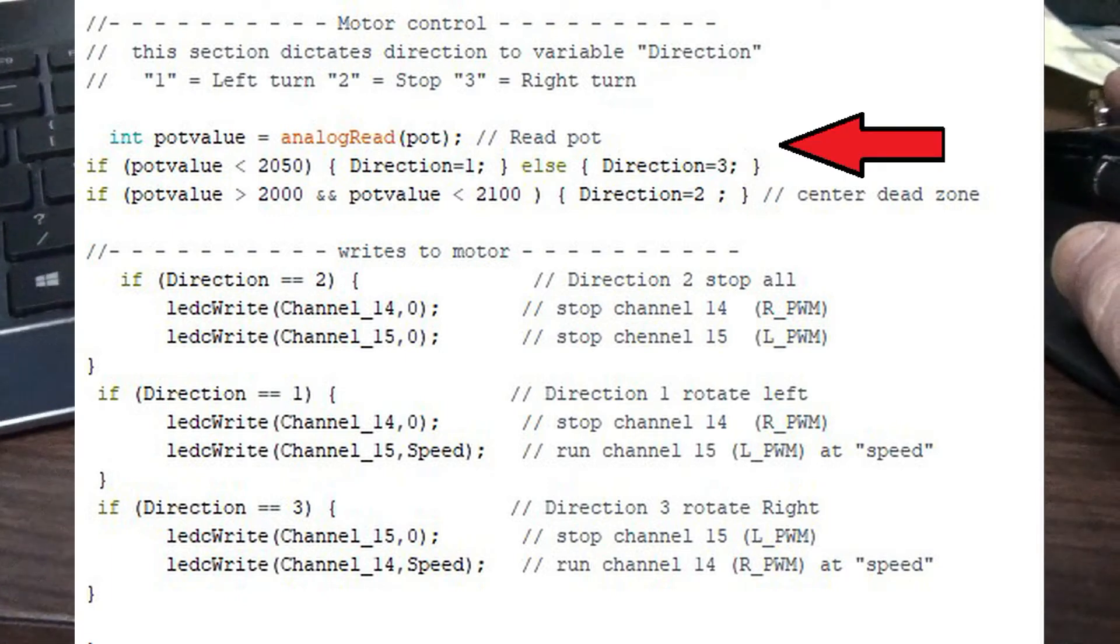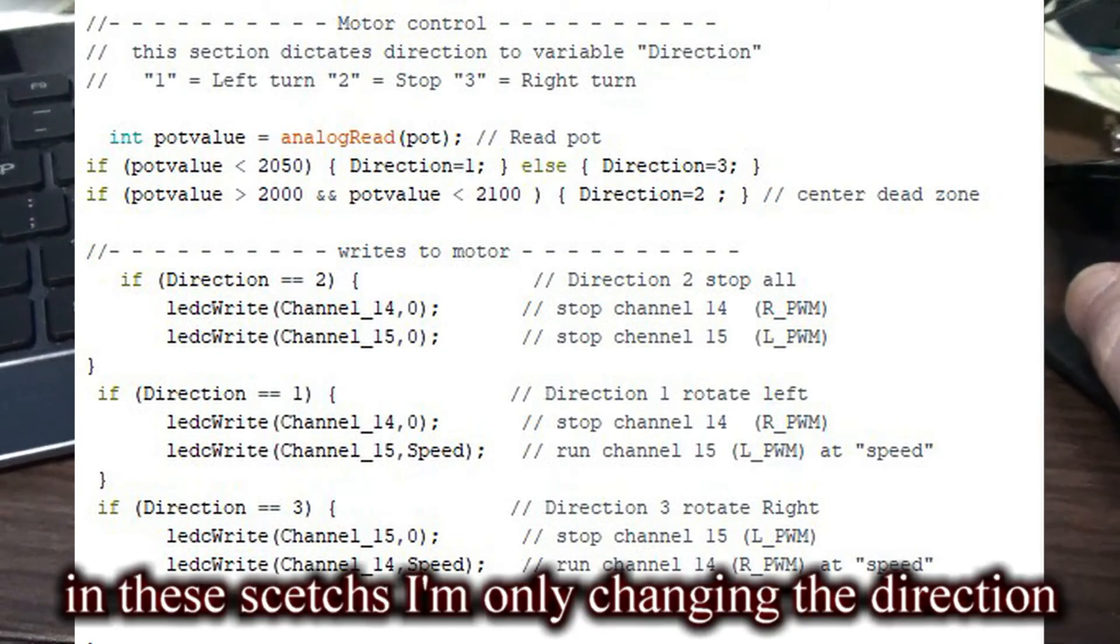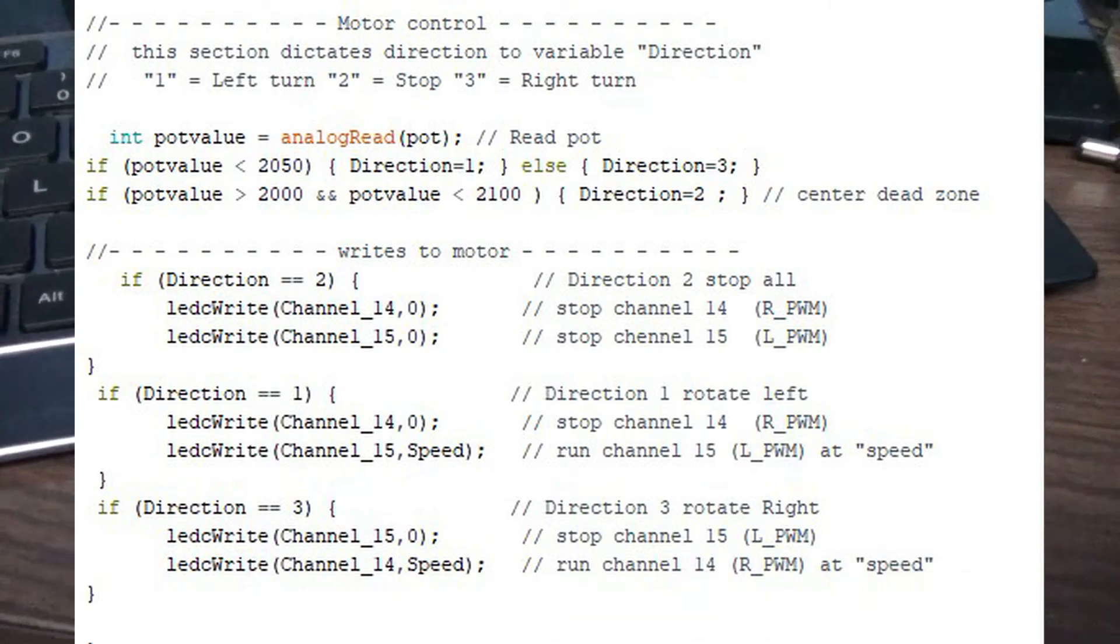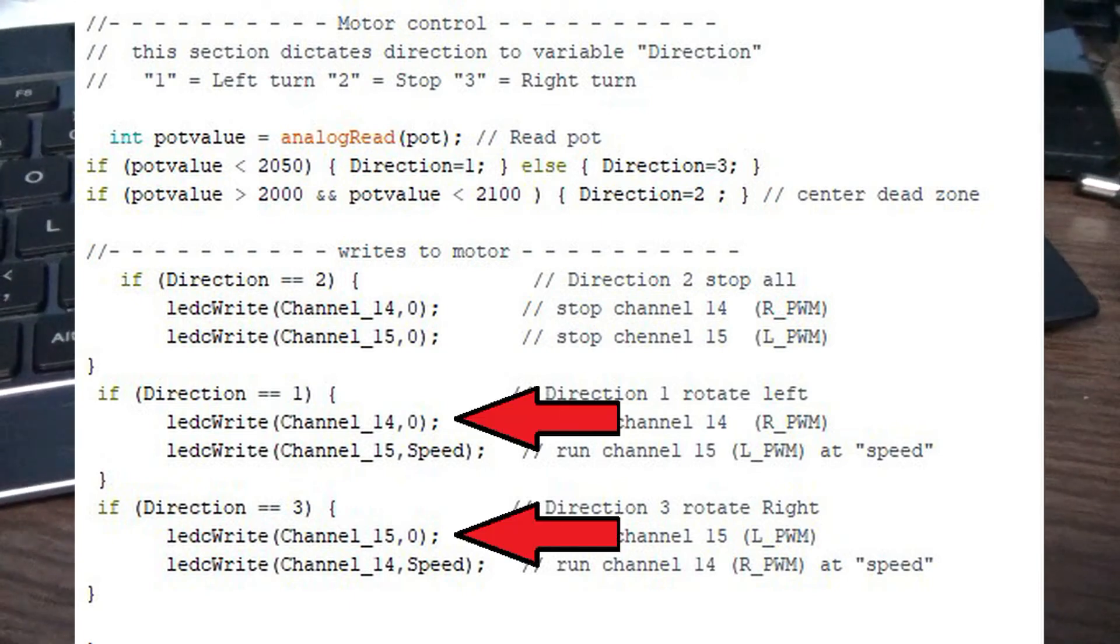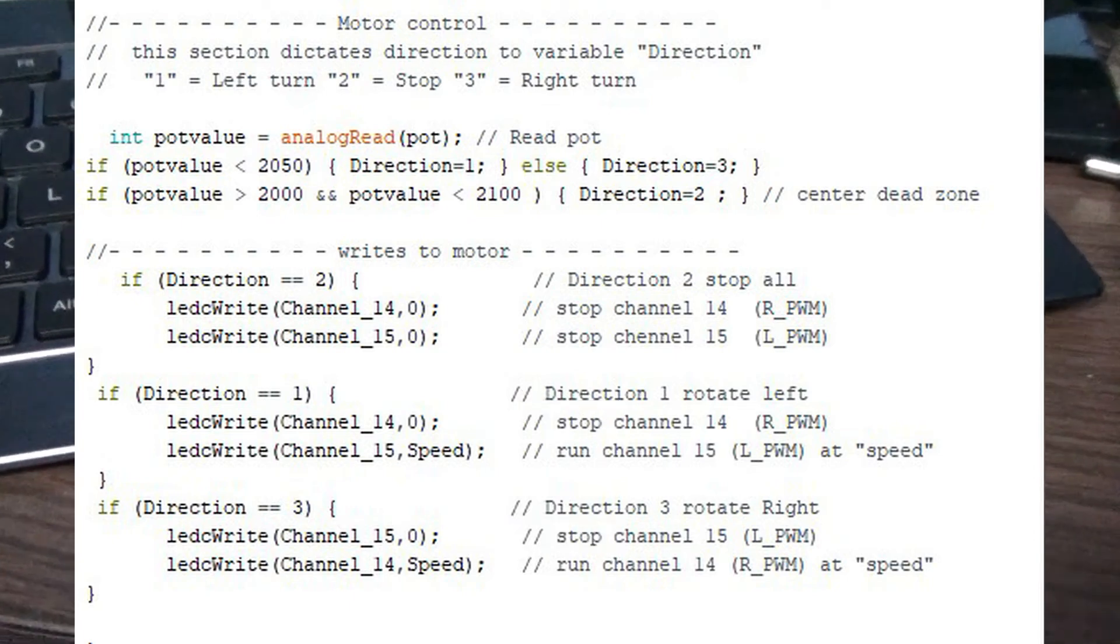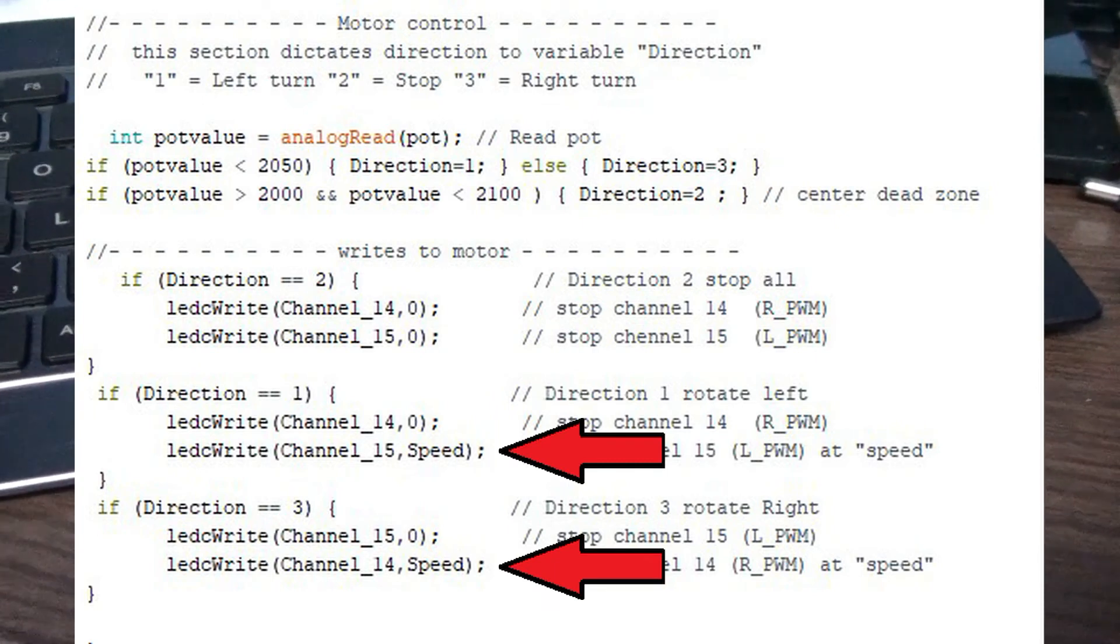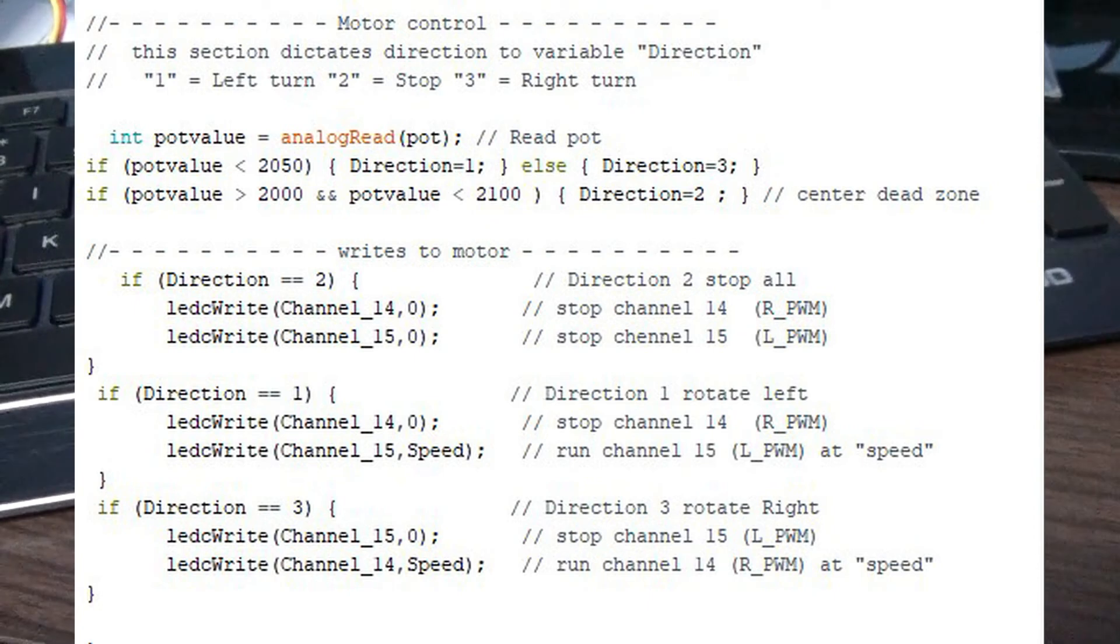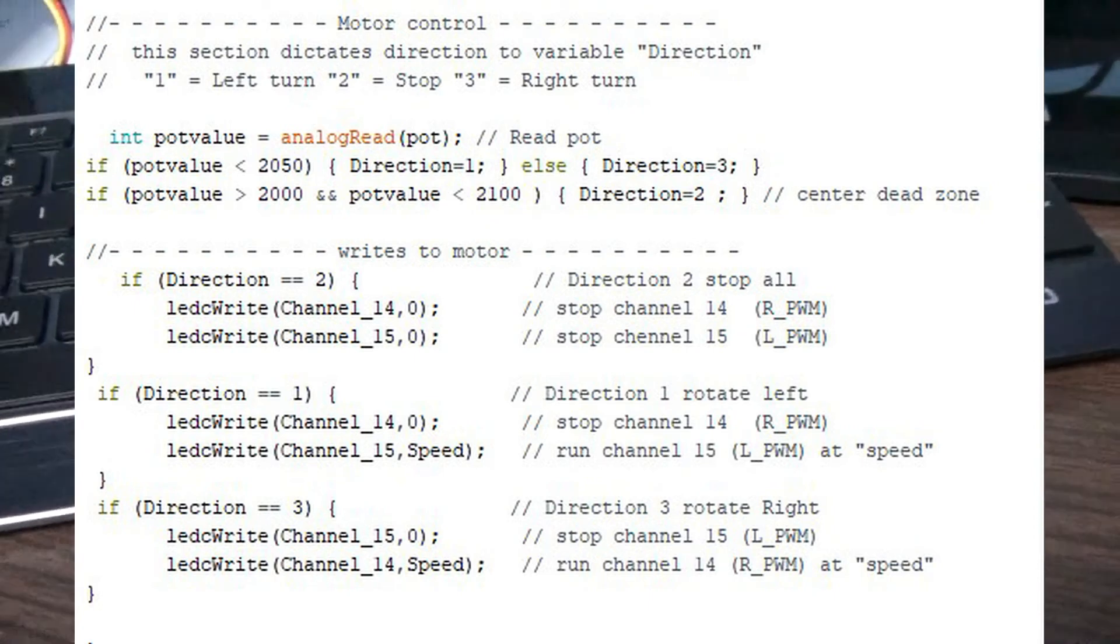Here under motor control you dictate the variables direction and speed. Down here we're writing the motor. First we're writing zero to the channel opposite of the one we're trying to drive. Then we're actually driving the channel we want to. If you're writing a speed value to both channels at the same time you might burn up your motor driver.